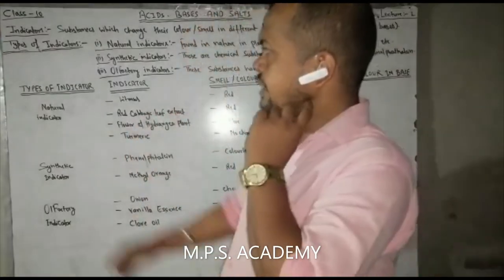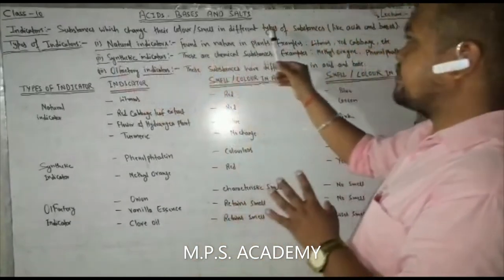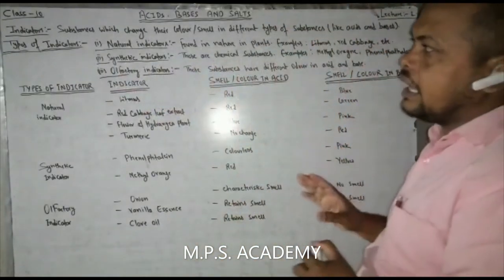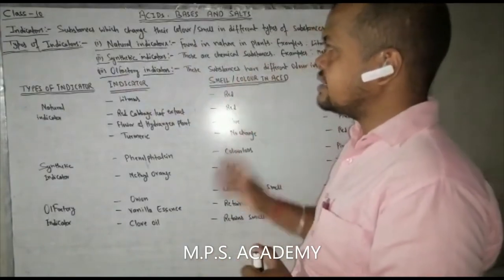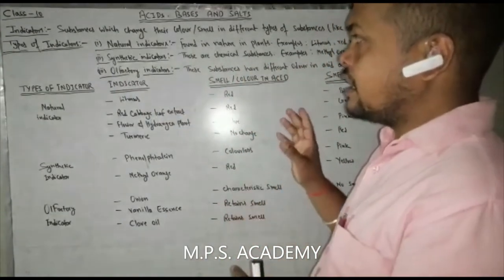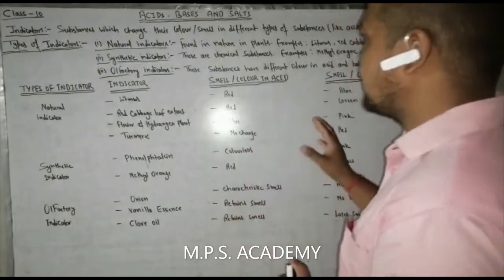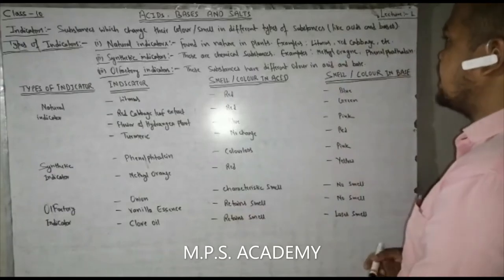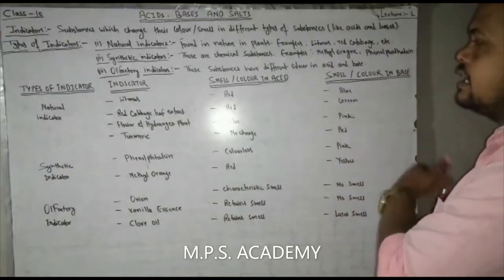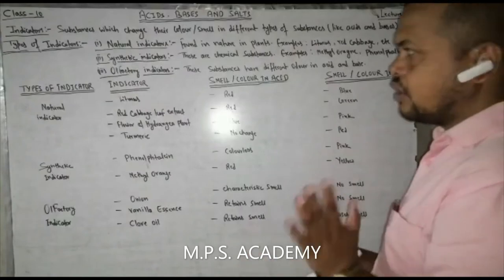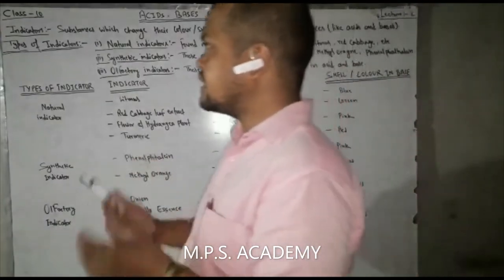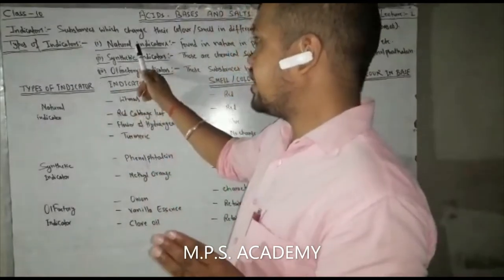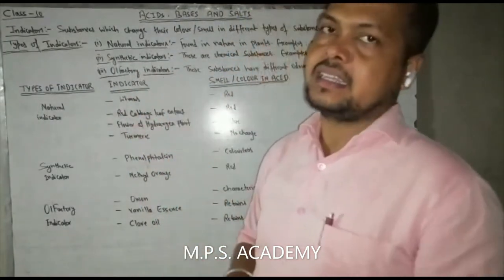Indicator is a substance which changes the color and smell in different types of substances like acids and bases. We use different types of indicators: natural indicators, synthetic indicators, and factory indicators.